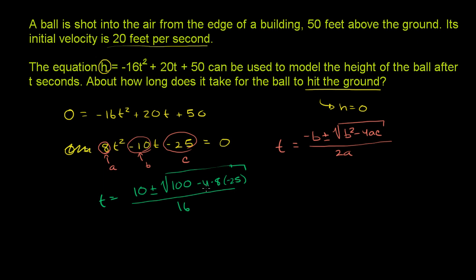Let's see if we can simplify this a little bit. The negative sign, negative times a negative, these are going to be positive. 4 times 25 is 100, times 8 is 800. So all that simplifies to 800. And we have 100 plus 800 under the radical sign. So this is equal to 10 plus or minus the square root of 900, all of that over 16.